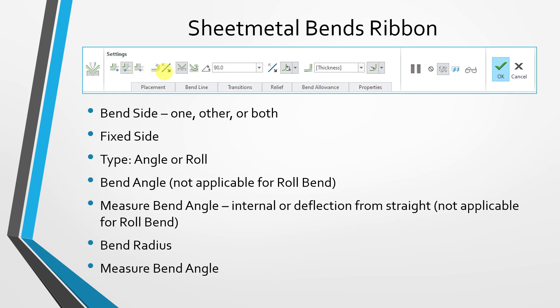Then we have a flip icon that allows us to change which side is the fixed side. We also have a couple of buttons that allow you to toggle the type — whether you're doing an angle bend or a roll bend. With an angle bend, you specify both the angle and the radius. With a roll bend, you just specify the radius and it bends to the remainder of the material on the bend side.